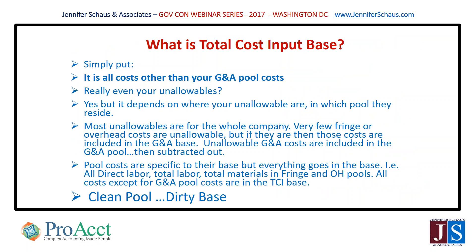The total cost input base is really all costs other than your G&A pool costs, even the unallowables. Unallowables will either fall into the G&A pool or be in the G&A base because they're related to fringe or overhead cost. They do tend to be for the whole company. As auditors, we talk about clean pool, dirty base — this is specifically true of the G&A. You want to see everything in that base, but the pools are made up of specific costs that are beneficial to certain groups in the company.